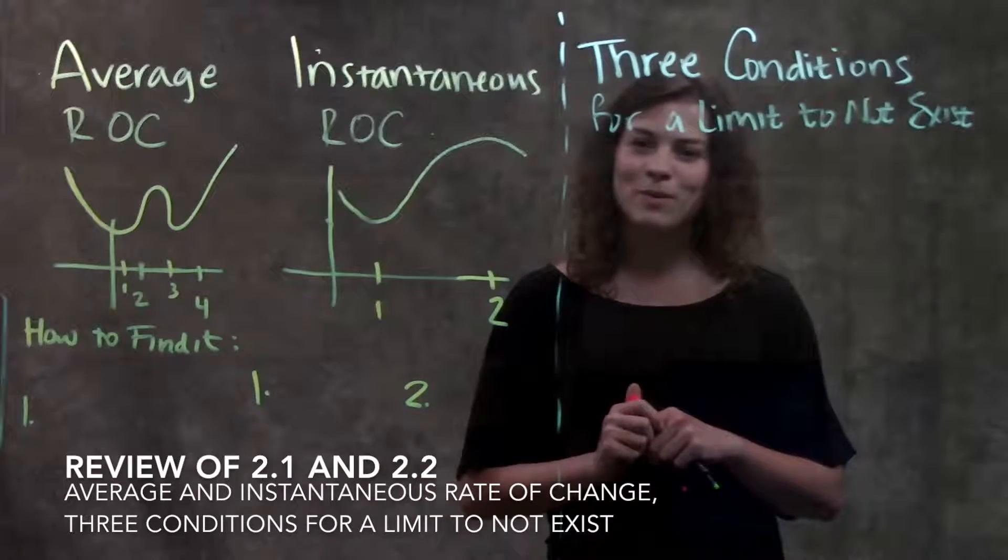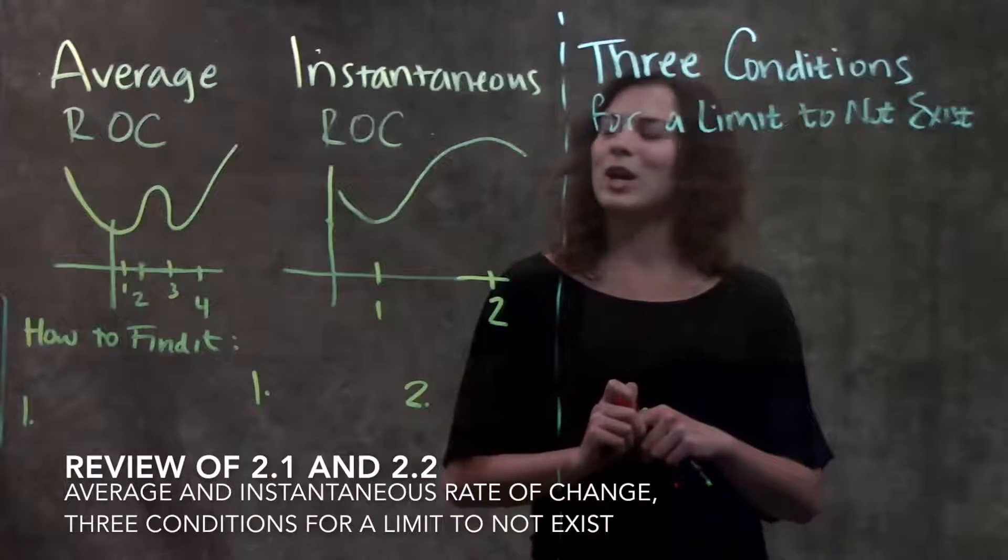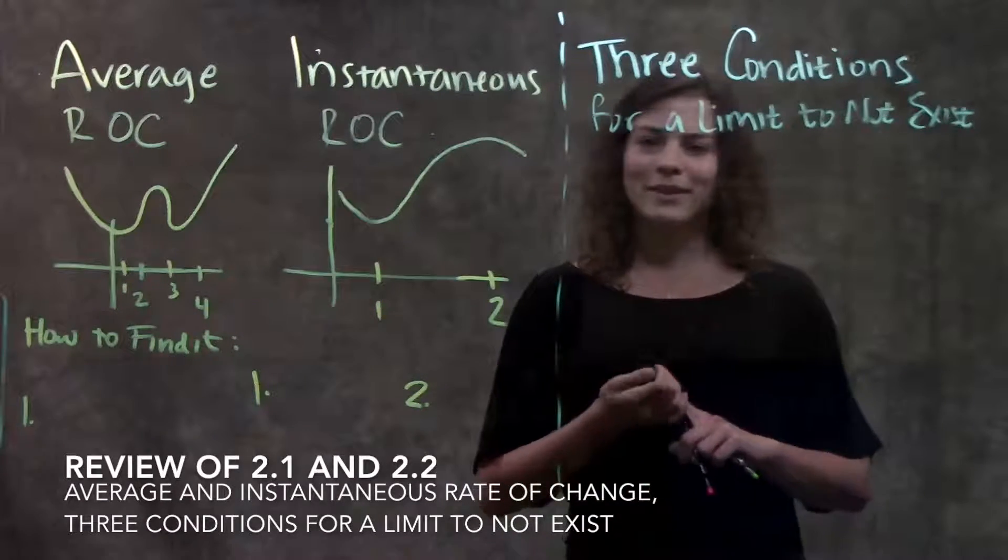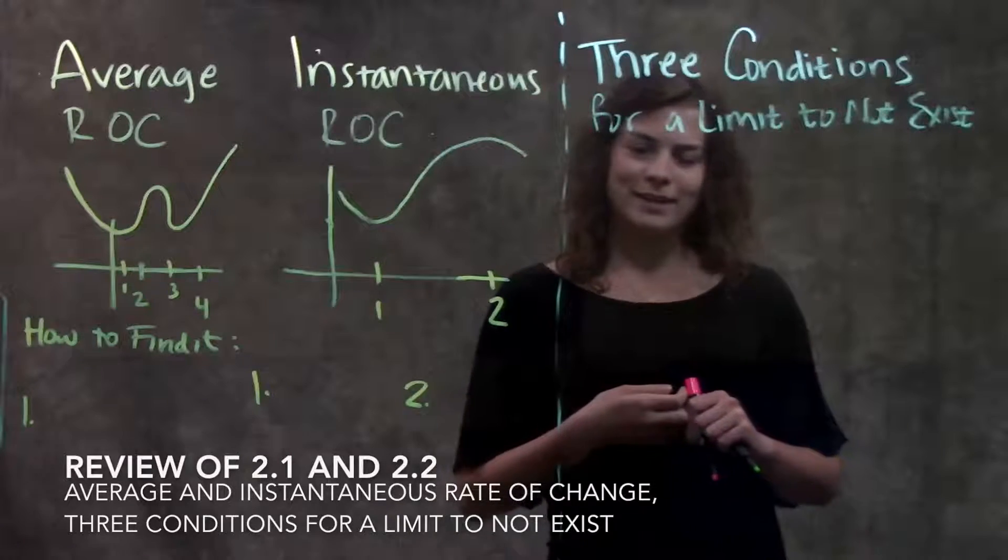This is a review over sections 2.1 and 2.2. We're going to go over average rate of change, instantaneous rate of change, what they are, what they look like, how to find them, and also three conditions for a limit to not exist.